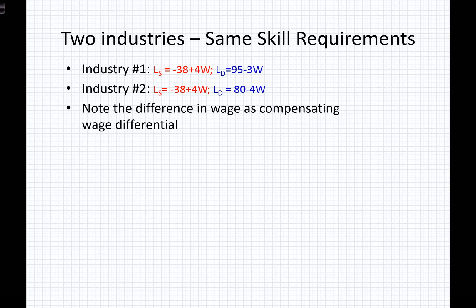When considering wages and worker preferences, we have to think about mobility, complete information, and the fact that workers are REM. We can also consider a couple of scenarios looking at labor supply and labor demand for two different industries where we have the same skill requirement, and consider the compensating wage differential that they would have among them.